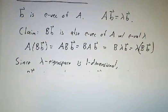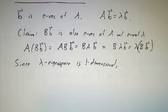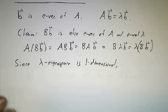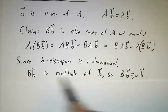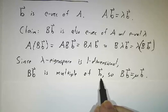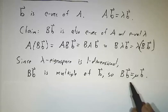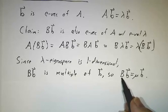But we assume that the multiplicity was 1. So there is only one eigenvector with eigenvalue λ up to scale. So Bb has to be a multiple of b. In other words, b is an eigenvector of B.